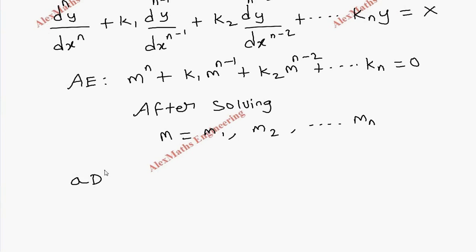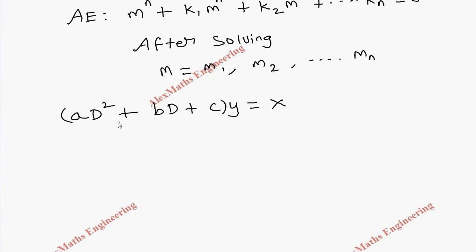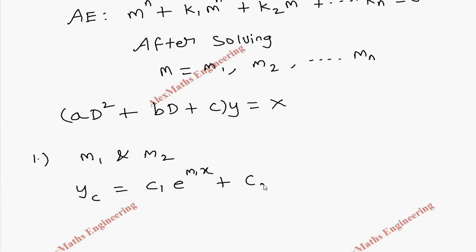Suppose it is (aD² + bD + c)y equals some function. By solving this, we get two values of m. In the first case, if m1 and m2 are two different values, then we write the complementary function as c1 e^(m1 x) plus c2 e^(m2 x).